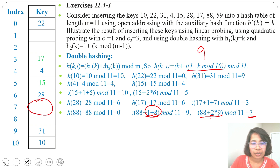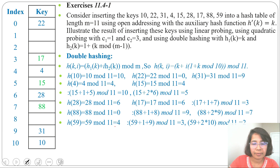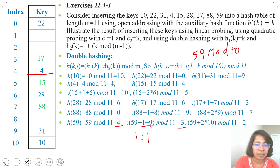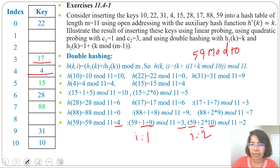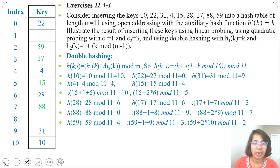Insert 88 at slot 7. In quadratic probing we didn't get a slot for 88, whereas in linear probing and double hashing we inserted 88. Next, key 59: 59 mod 11 = 4, slot 4 is filled. For i = 1: (59 + 1 * (1 + 59 mod 10)) mod 11 = (59 + 10) mod 11 = 3. Slot 3 is filled. For i = 2: (59 + 2 * 10) mod 11 = 79 mod 11 = 2. Slot 2 is free, insert 59 at slot 2.